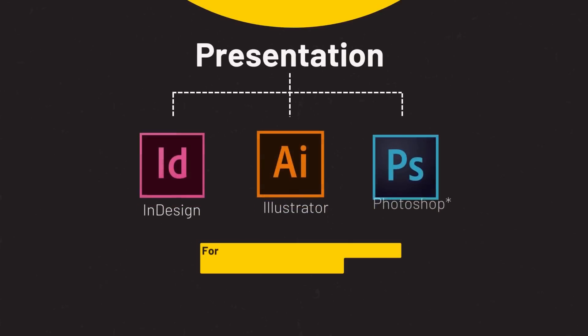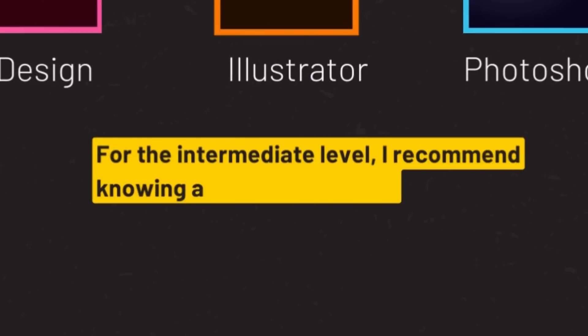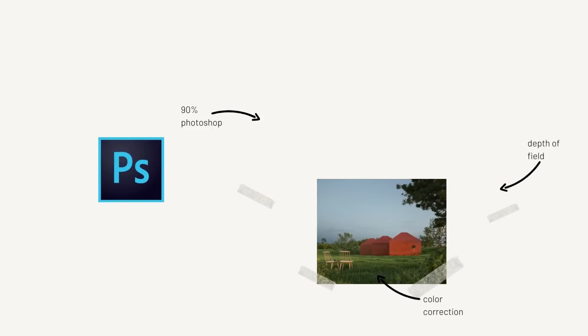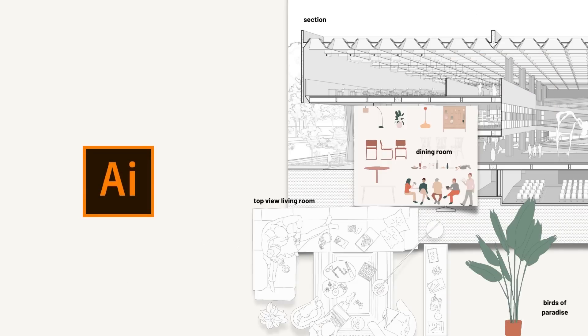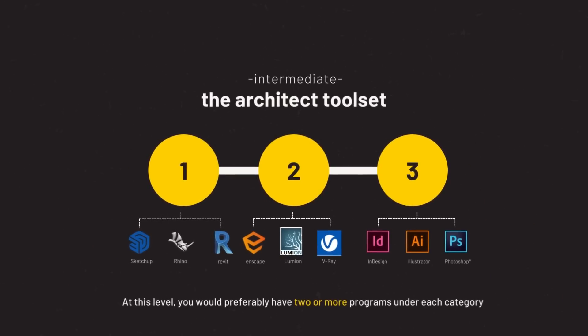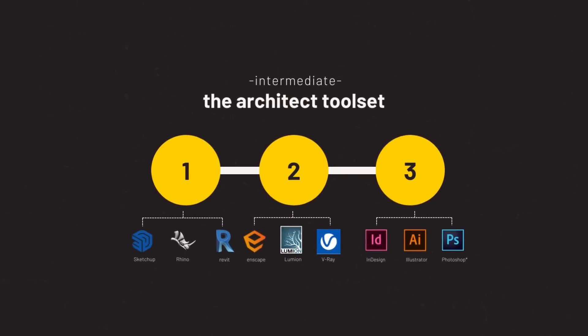For our third category, presentation, I would have at least three different programs on which you should have an intermediate level: Photoshop, Illustrator, and InDesign. Photoshop will help you perfect your visualizations or create collage renderings. Illustrator will help you improve your line work like floor plans and sections. And InDesign will help you craft presentation boards, portfolios, and booklets to make you stand out. With an intermediate level, you can switch from Revit to ArchiCAD, create a decent render in V-Ray or Lumion, and polish drawings with Adobe software.